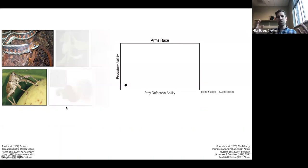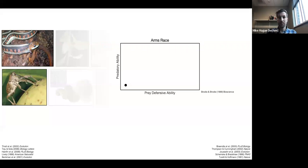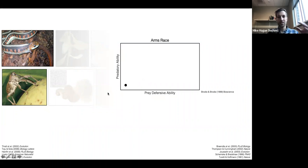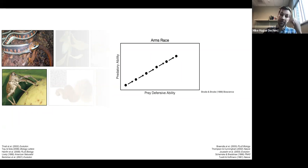Co-evolutionary arms races between natural enemies typically involve some sort of predatory ability of a predator and an ability of the prey to defend against that predation. These are typically quantitative traits where more is better in these arms races. You can imagine starting at some ancestral low level of predatory and prey defensive ability, and essentially escalation in one species is met by counter-escalation in another, driving this arms race escalation until some cost or trade-off is met.